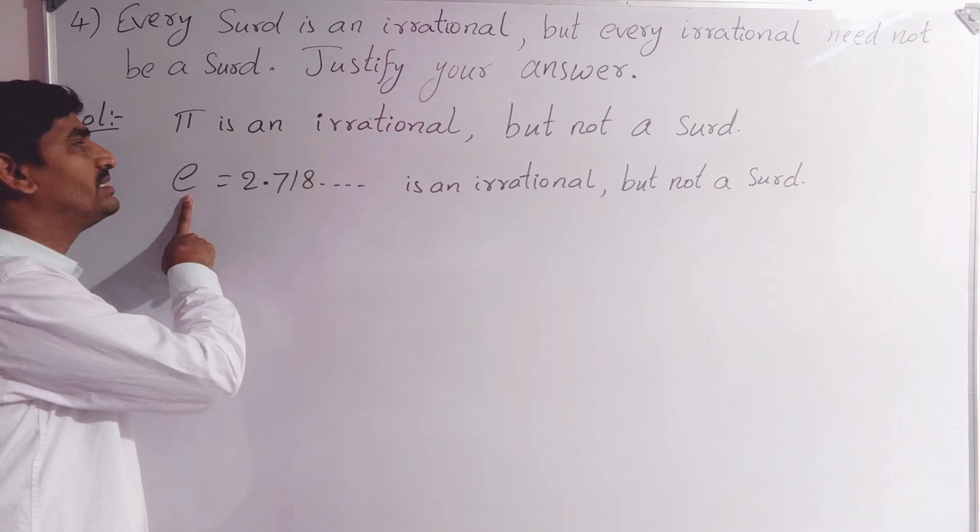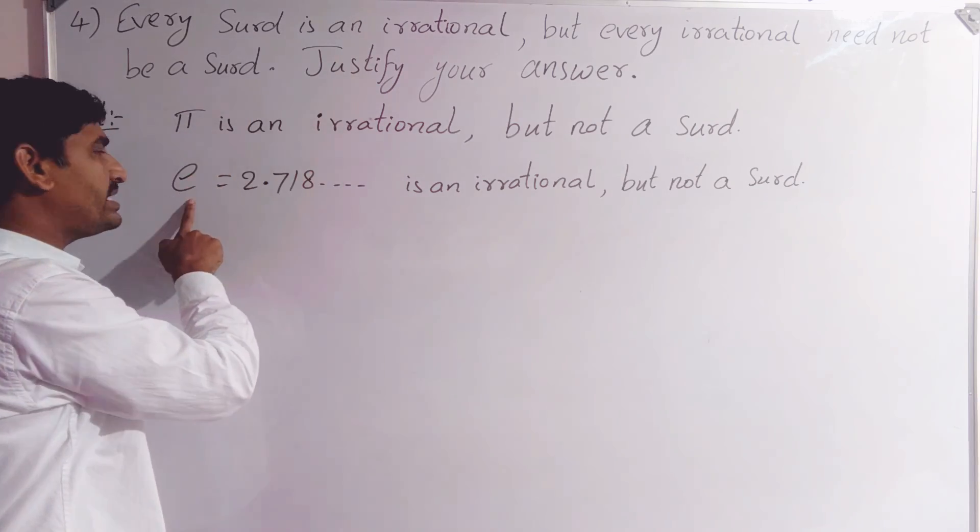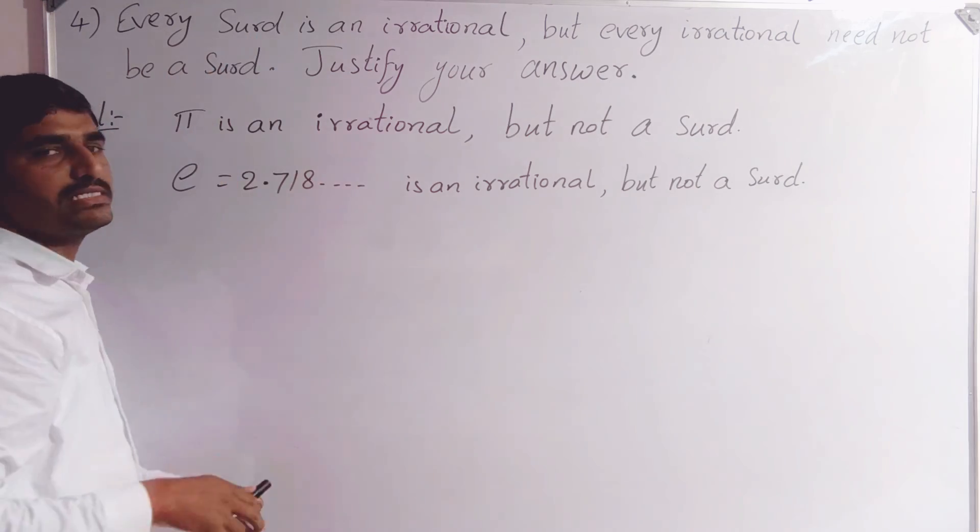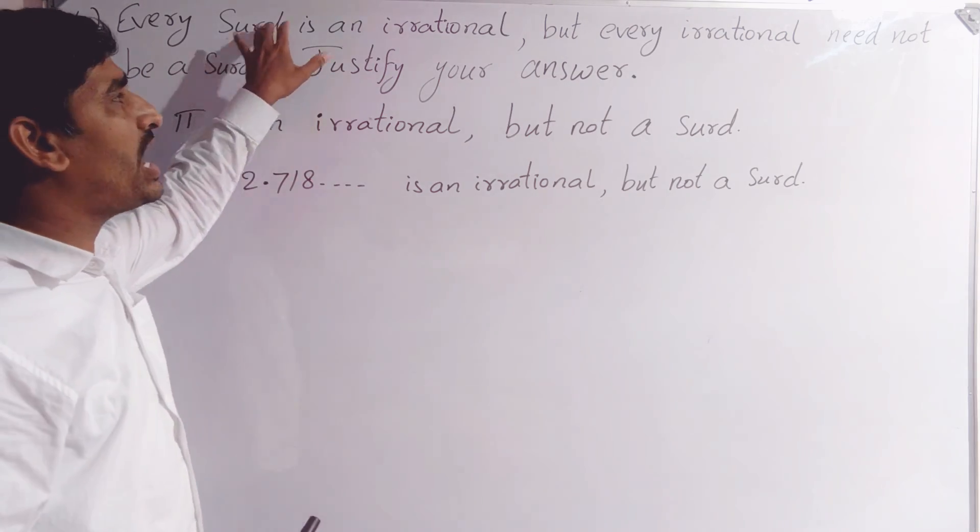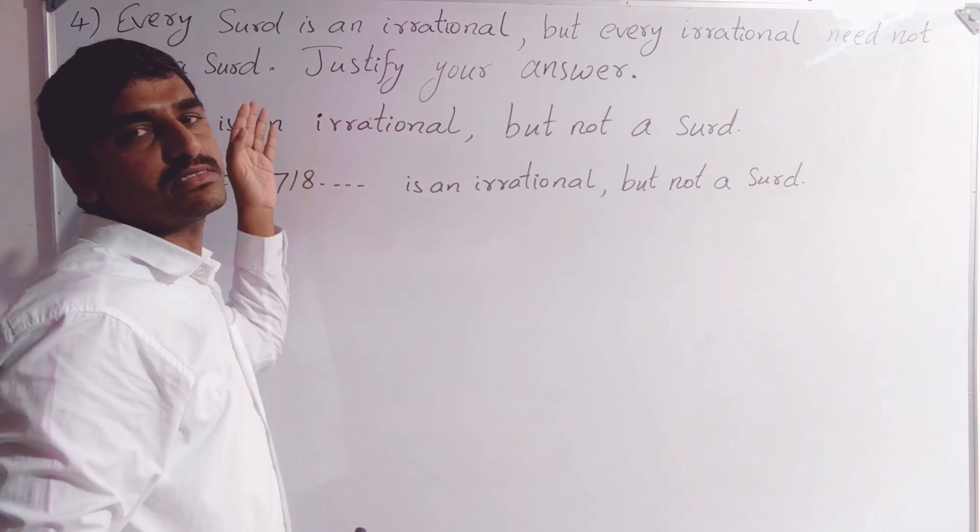There is no root for this. So pi is an irrational but not a surd. E is an irrational but not a surd. With these examples we can say that all the surds are irrational, but all the irrationals need not be surds.